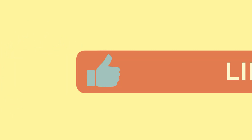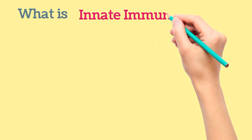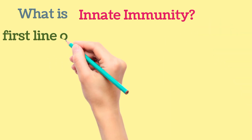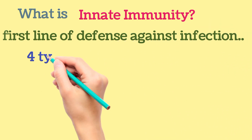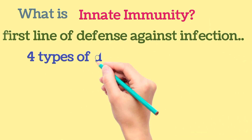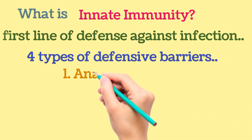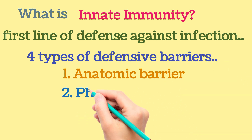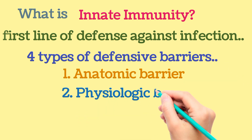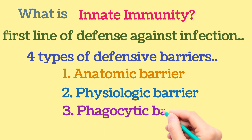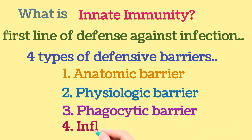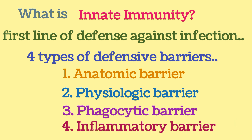Coming to the topic innate immunity, the first question is: what is innate immunity? It is the first line of defense against infection. Innate immunity has four types of defensive barriers: anatomic barriers, physiologic barriers, phagocytic barriers, and inflammatory barriers.